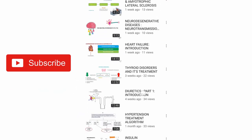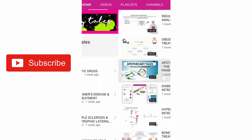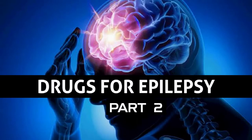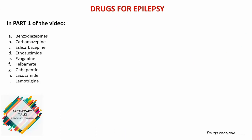Welcome everyone to the Apothecary Tales: the basics of pharmacology. Today we'll be talking about the remaining drugs used in the treatment of epilepsy. In the first part of the video we discussed drugs such as benzodiazepines, carbamazepine, eslicarbazepine, ethosuximide, ezogabine, felbamate, gabapentin, lacosamide, and lamotrigine. We'll be talking about the remaining drugs in this video.